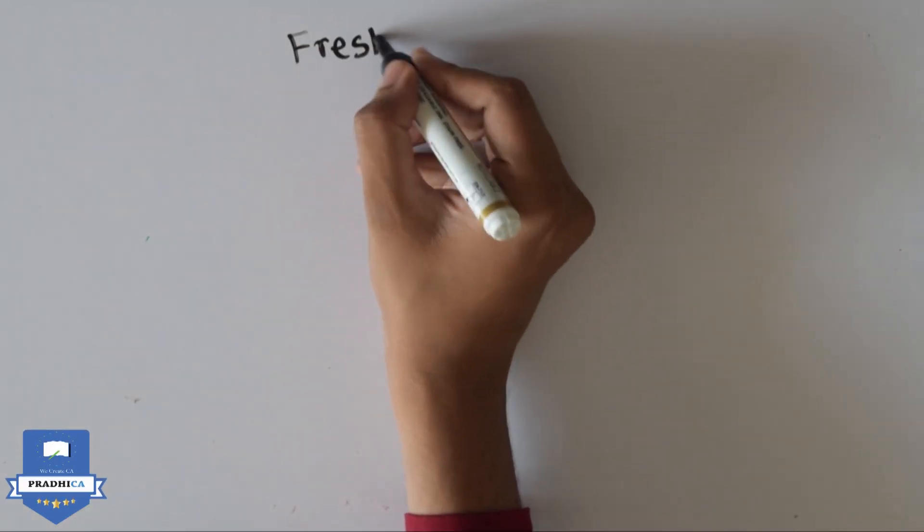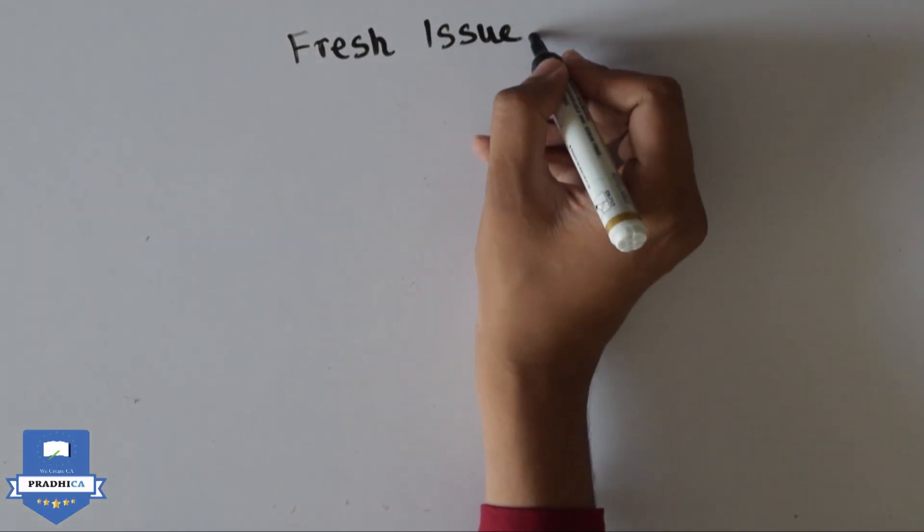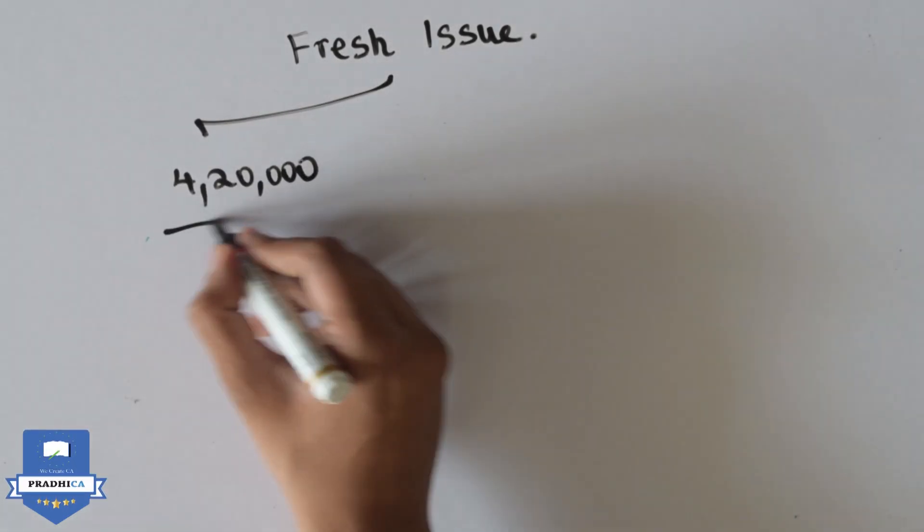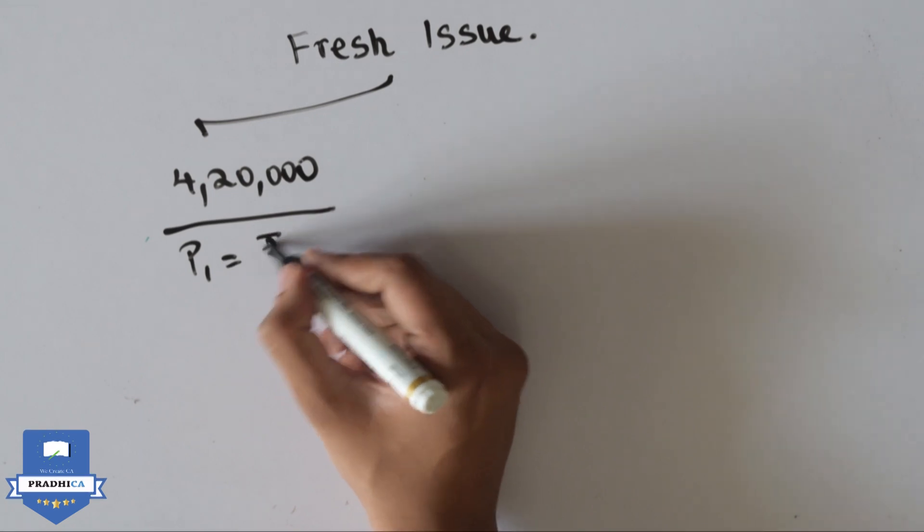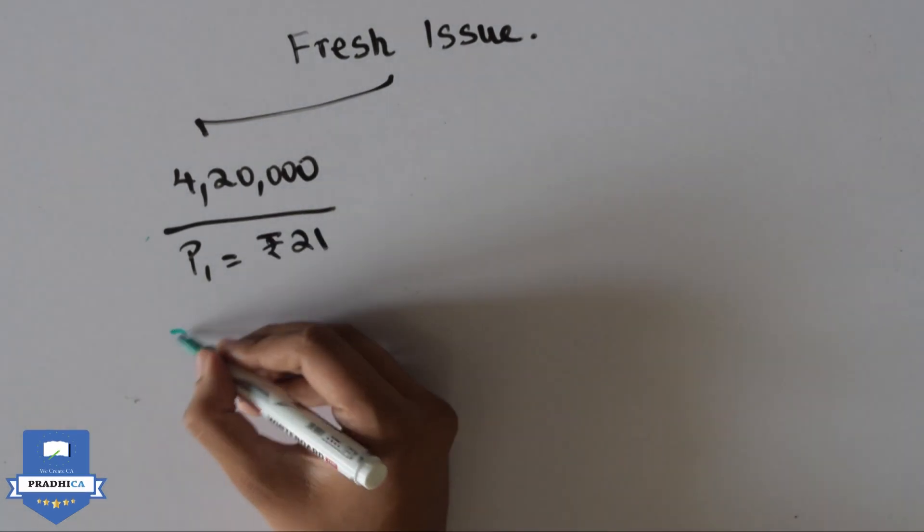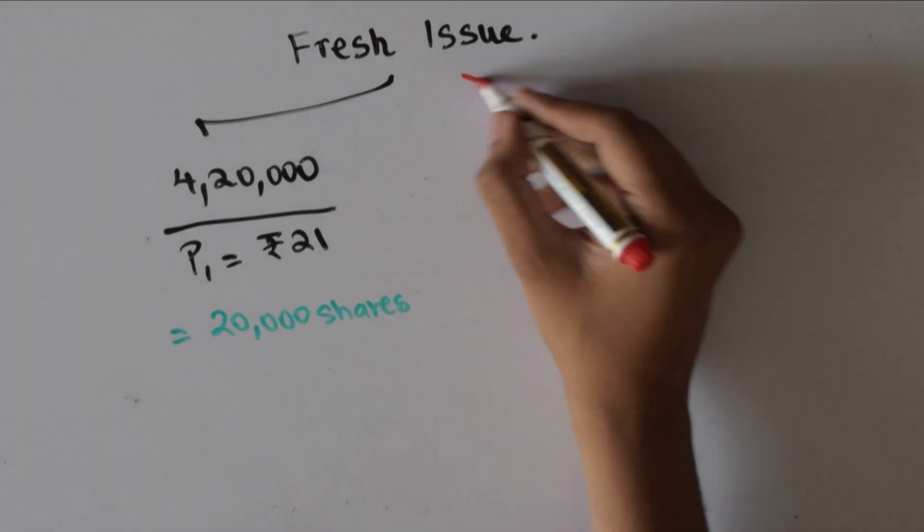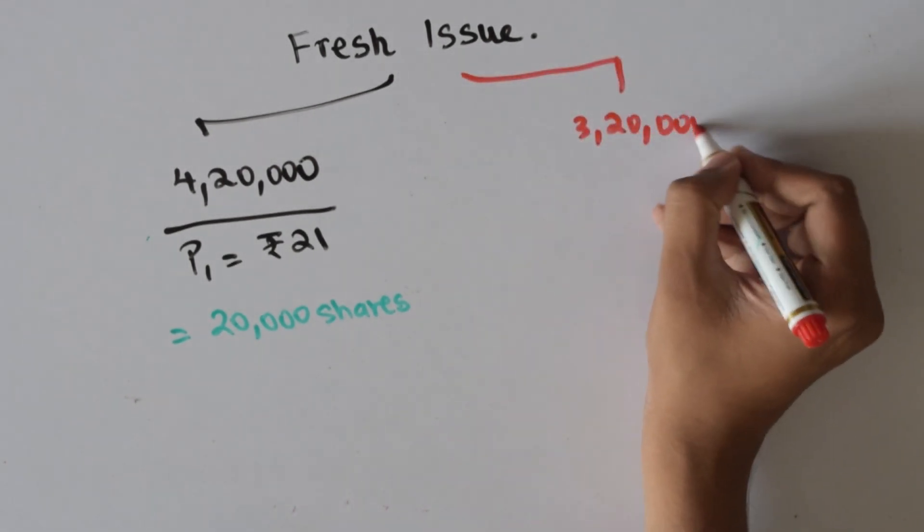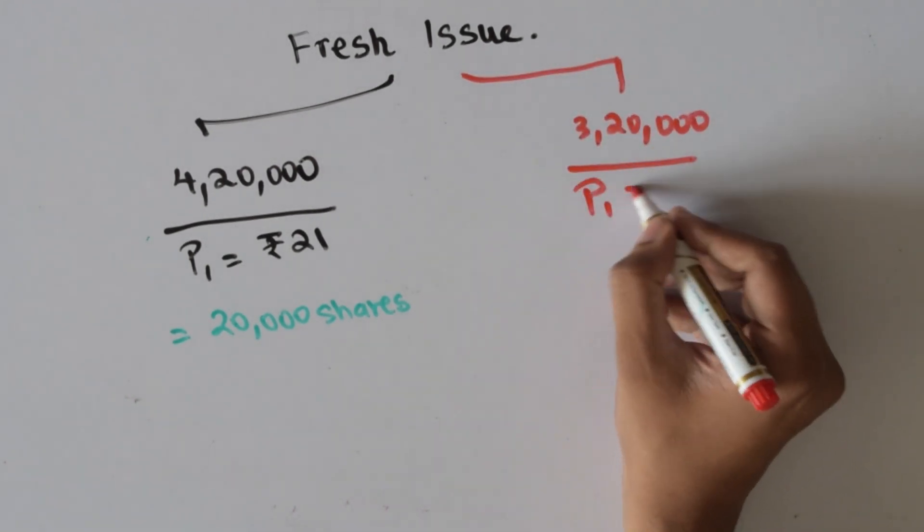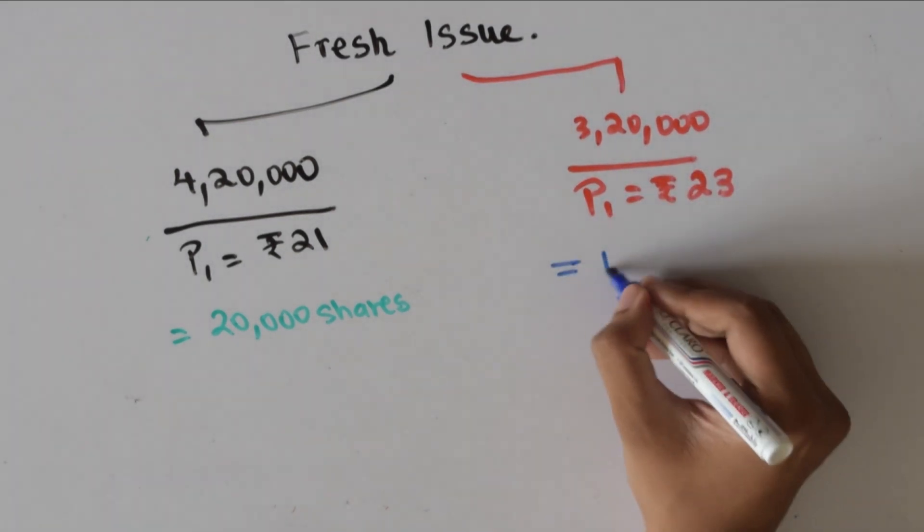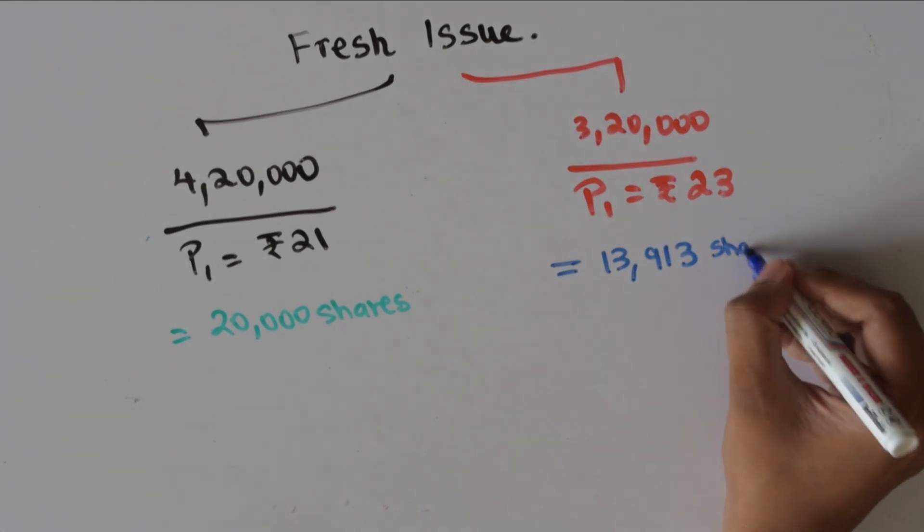Our company will be going for a fresh issue to fund the project. In the first case, since Rs 4,20,000 is additionally required, we go for an issue at the current market price of 21, requiring 20,000 shares. In the second case, since only Rs 3,20,000 is required, it is sufficient if we raise 13,913 shares to fund the project.